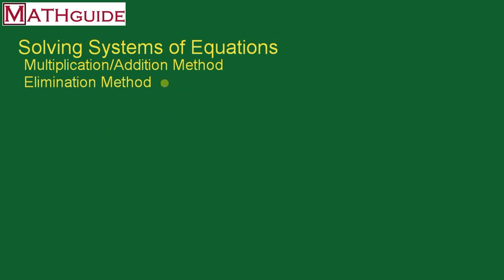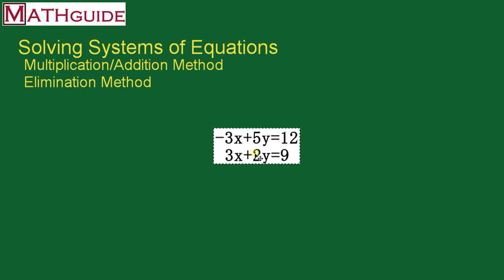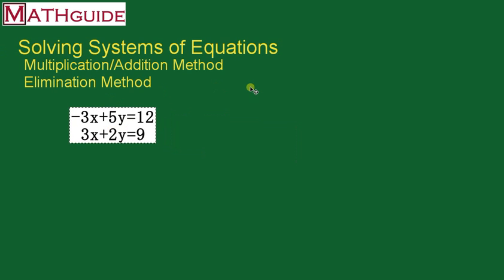It goes by many names, but those are the two common ones. In another video, I showed how to solve a system of equations using the addition method. You'll see that this was solved by using the addition method — we do have another video on that you can check out. This was a nice problem to be solved by the addition method because the coefficients of the x term are opposite of each other, so we could just add these two equations together and cancel the x term.